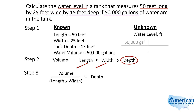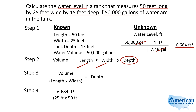I'm going to do a side problem where I convert 50,000 gallons to cubic feet, using the equivalent that says there are 7.48 gallons for every one cubic foot. This allows the gallons to divide out and I'm left with units of cubic feet. So 50,000 divided by 7.48 is 6,684 cubic feet. I can now take that 6,684 and plug it in as my volume, then divide it by the 25-foot width and the 50-foot length.